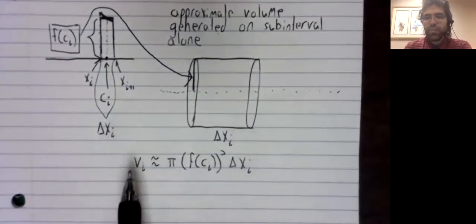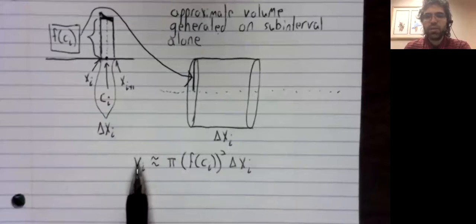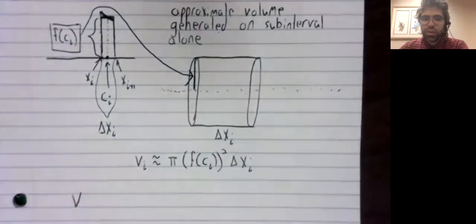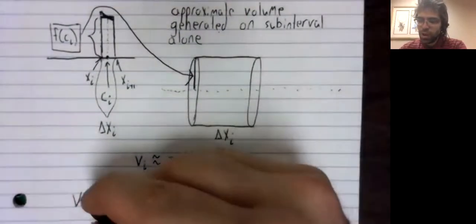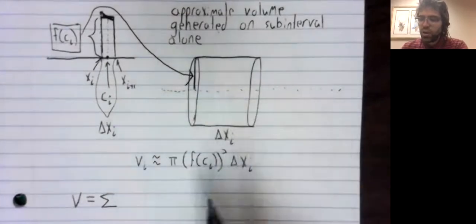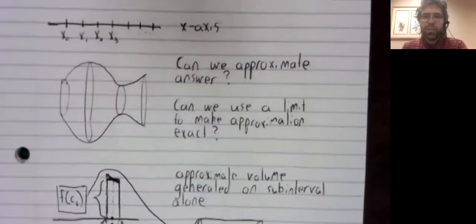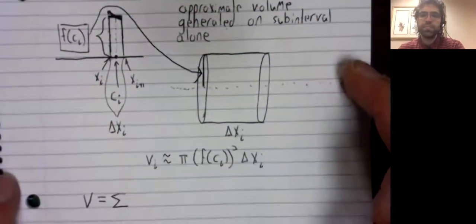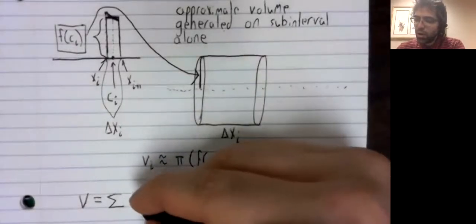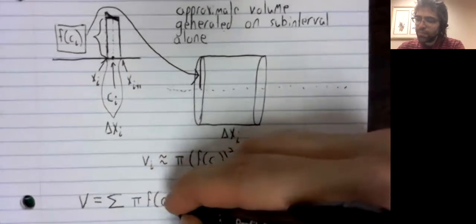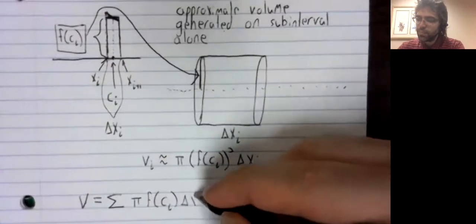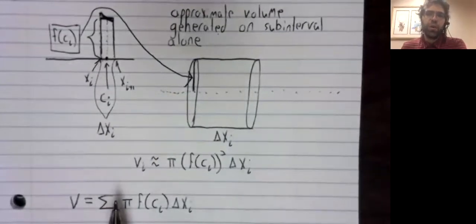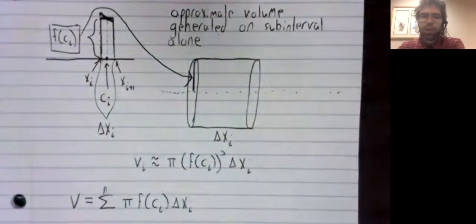And now, going back to what I said earlier, now that we've seen how to approximate the volume on a little sub-interval, to approximate the total volume, we take all of these approximations. We repeat this process on each of these intervals in turn, and we add them all up.